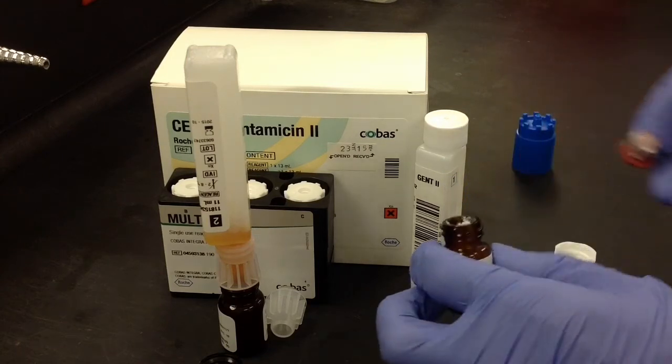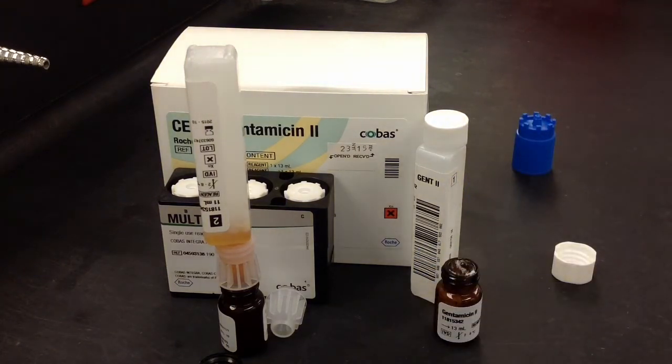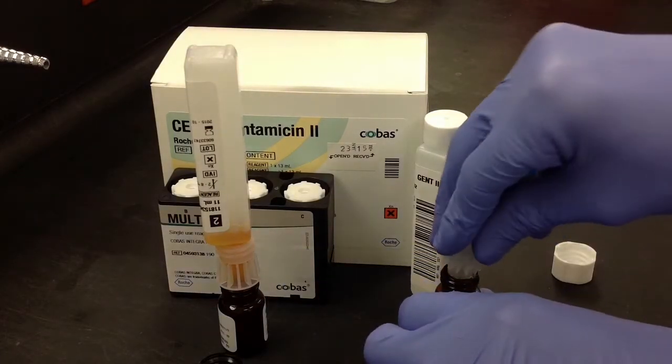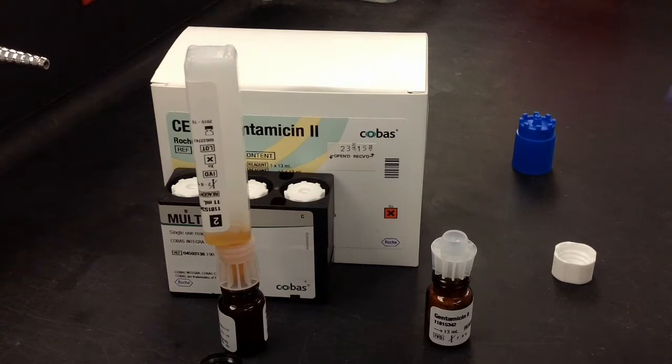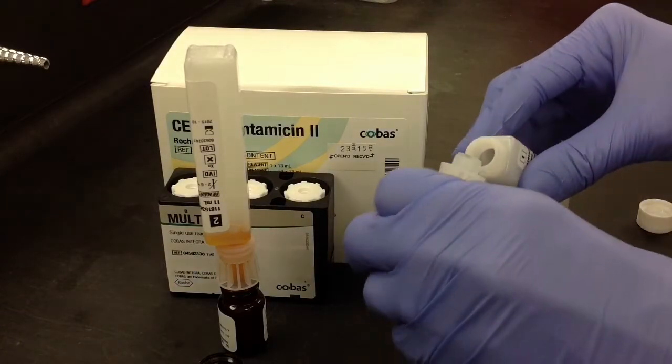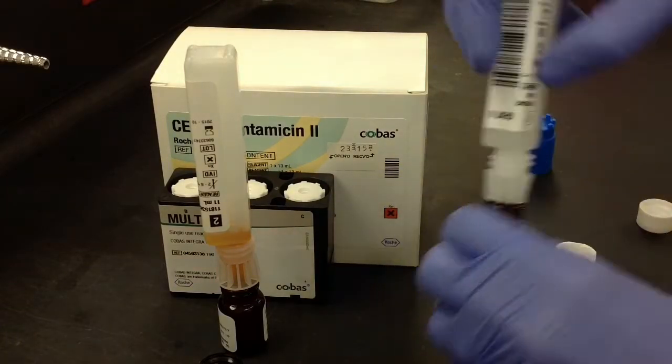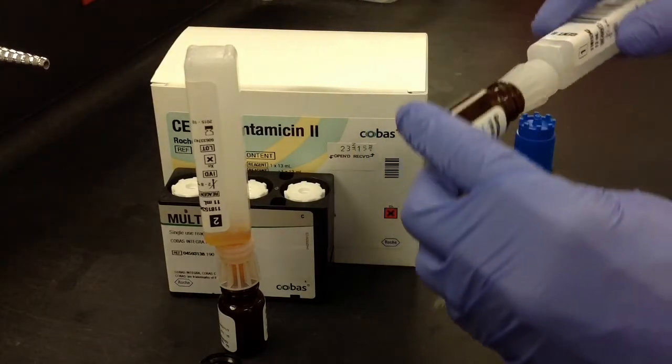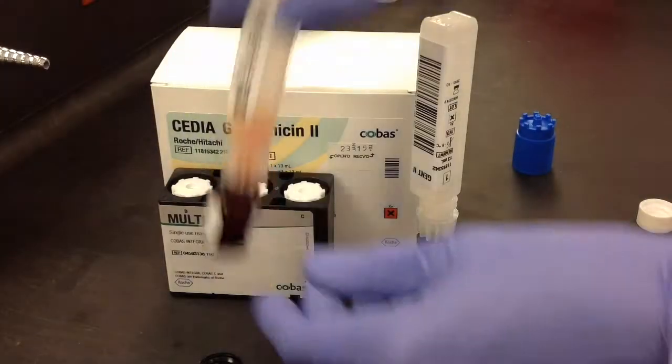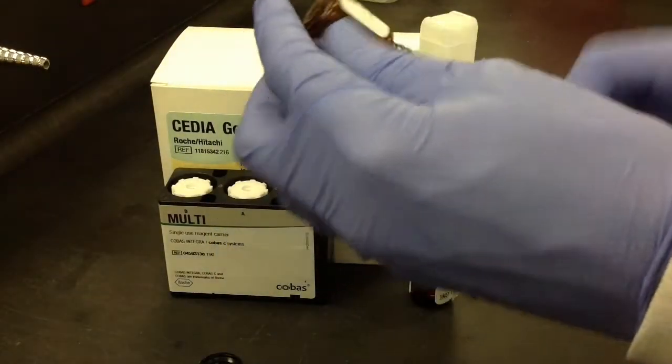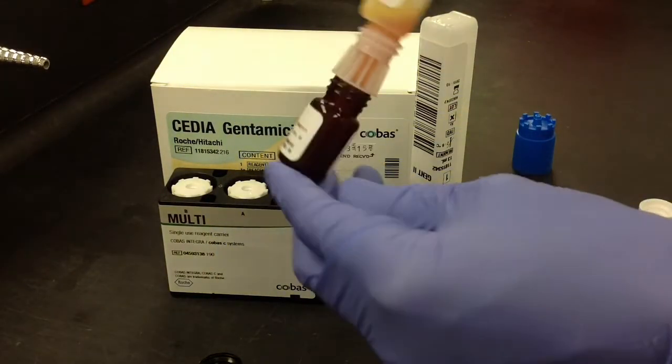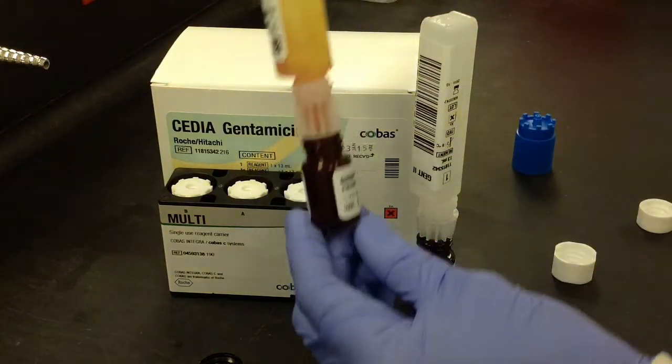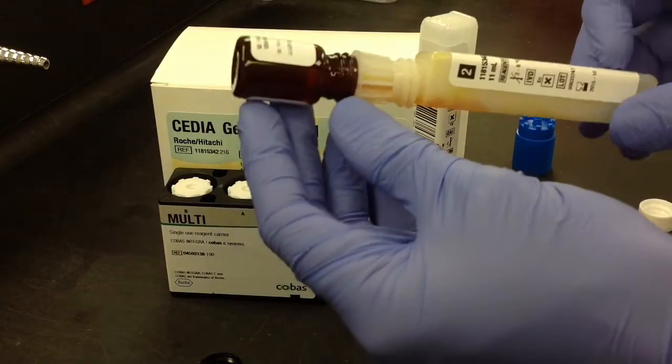So then you're going to go ahead and do the same thing with the white colored reagents. Remove the tops, attach the connector, and then just go ahead and connect them gently together. And then go ahead and give them a couple mixes. I'm just trying to get the lyophilized calibrator detached from the bottom and mixed into the liquid.